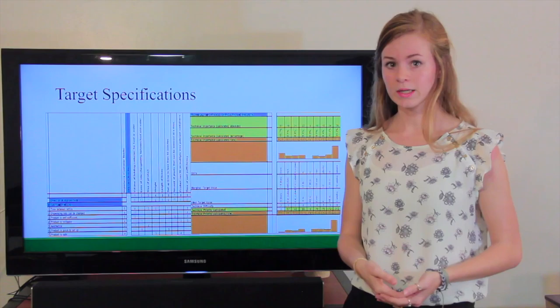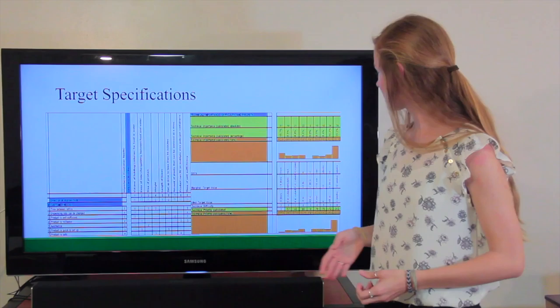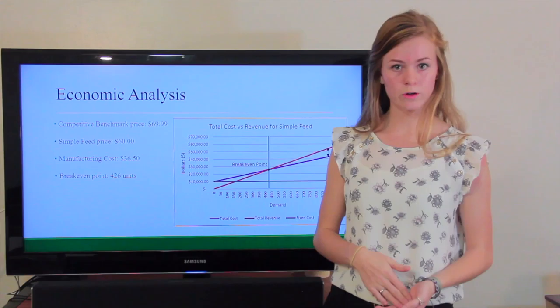We were able to translate these needs into measurable values, and what ended up being was the time of self-sufficiency ended up correlating with a lot of these customer needs. So that is going to be the most important specification to focus on when developing our product, because that is what seems to hit on most of the customer needs that we found within the target specifications.